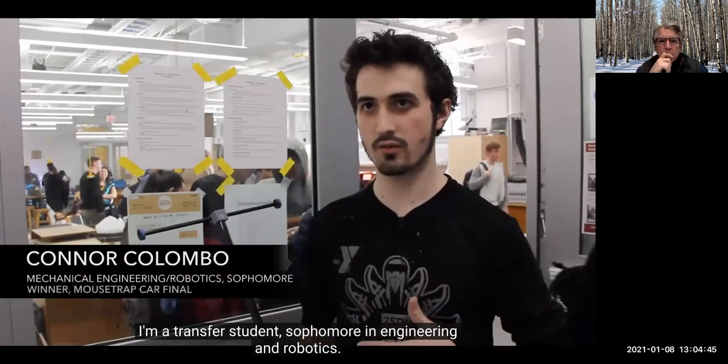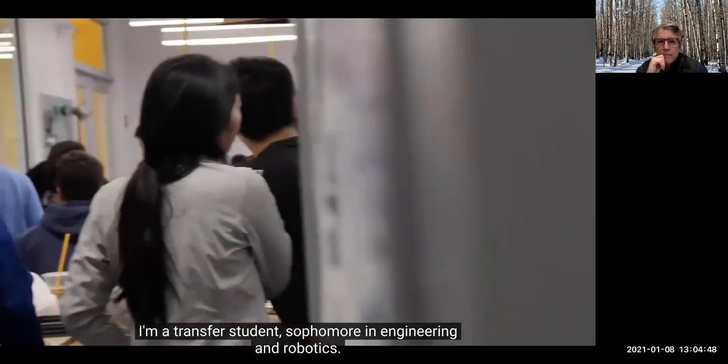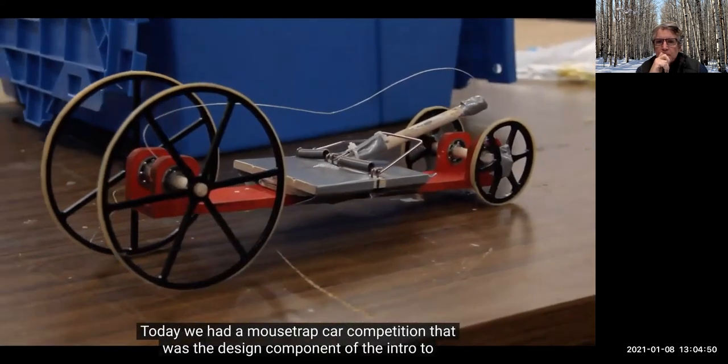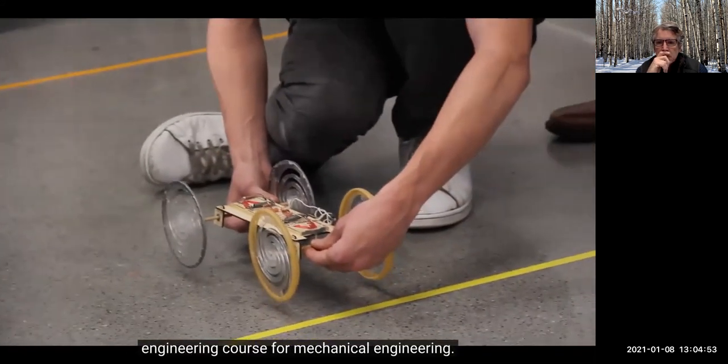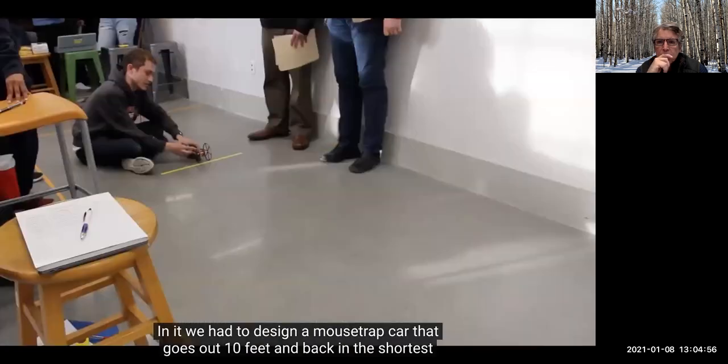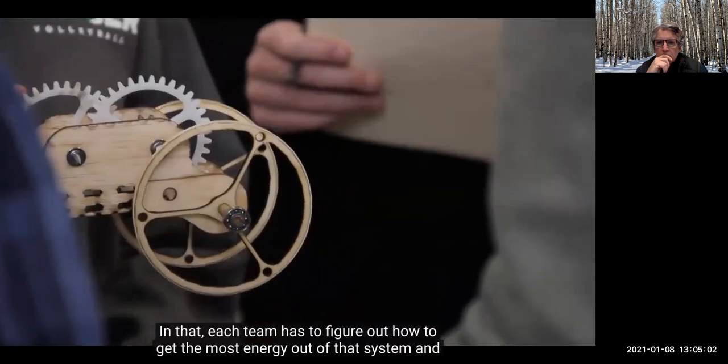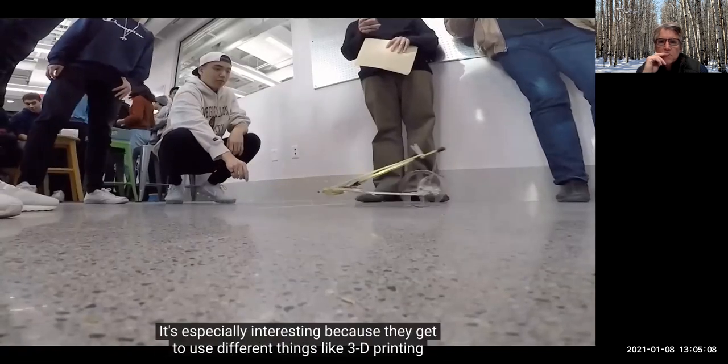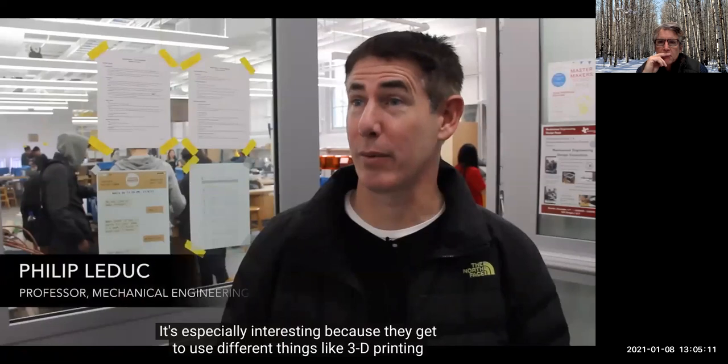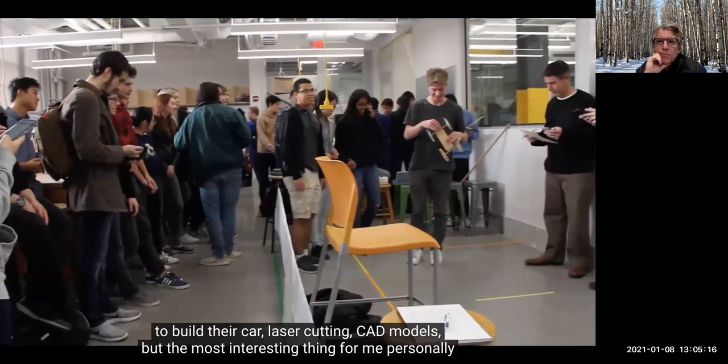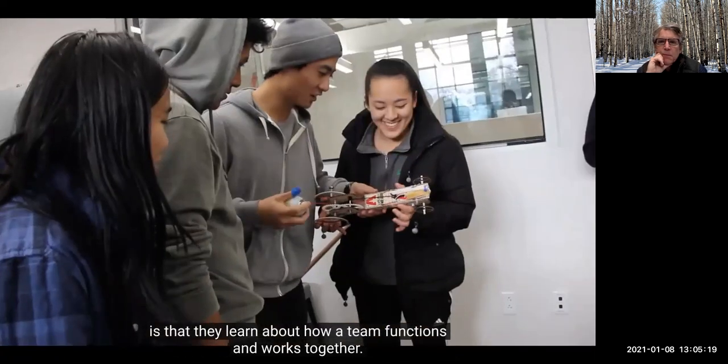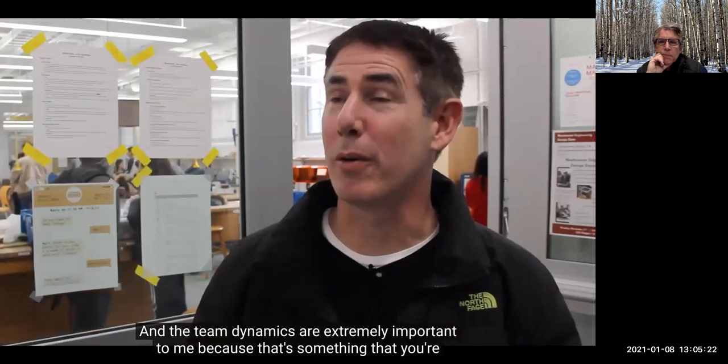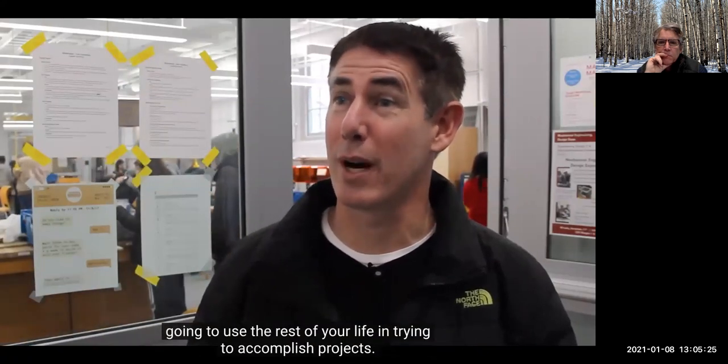I'm Connor. I'm a transfer student, sophomore in mechanical engineering robotics. Today we had a mousetrap car competition that was the design component of the intro engineering course for mechanical engineering. In it, we had to design a mousetrap car that goes out 10 feet and back in the shortest period of time possible. Every team is given two mousetraps and a set number of rubber bands. So each team has to figure out how to get the most energy out of that system and help their car. It's especially interesting because I get to use different things like 3D printing to build their car, laser cutting, CAD models. But the most interesting thing for me personally is that they've learned about how a team functions and works together. And the team dynamics are extremely important because that's something that you're going to use for the rest of your life in trying to accomplish projects.